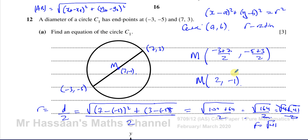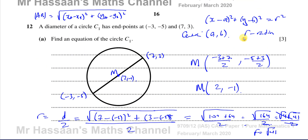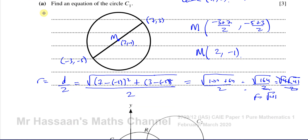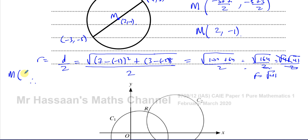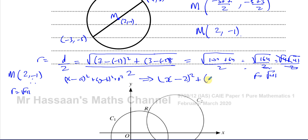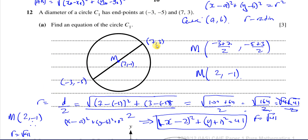Now we can write the equation of the circle. With center at 2, negative 1 and radius root 41, we substitute into x minus a squared plus y minus b squared equals r squared. This gives us x minus 2 squared plus y minus minus 1 squared equals root 41 squared, which simplifies to x minus 2 squared plus y plus 1 squared equals 41. That is the equation of circle C1.